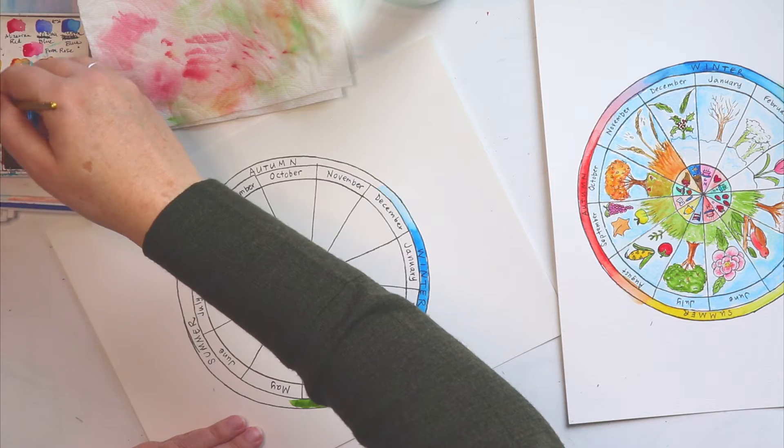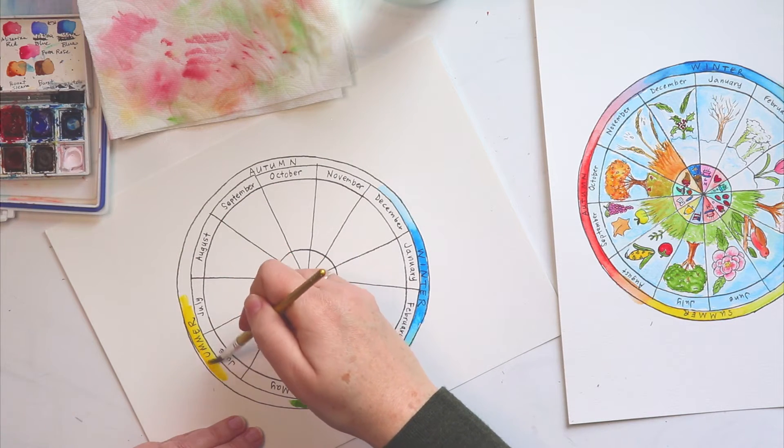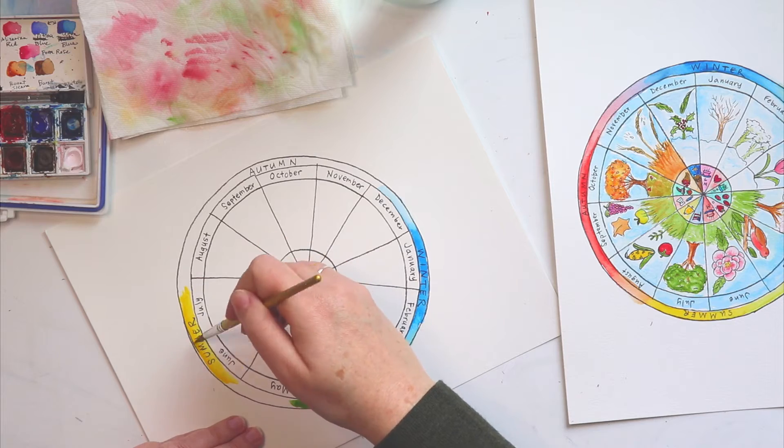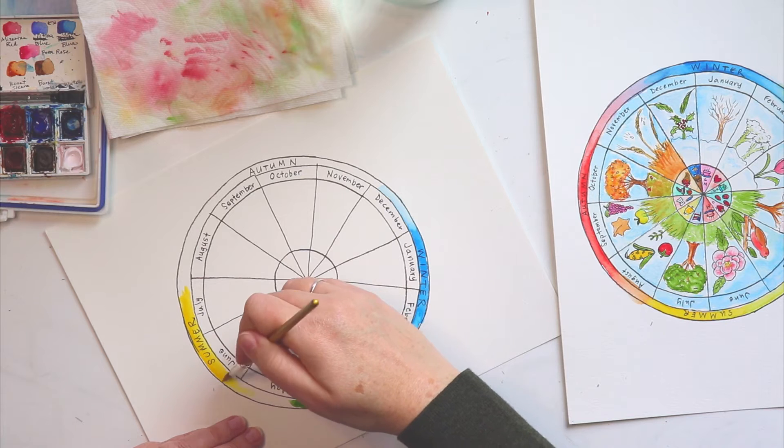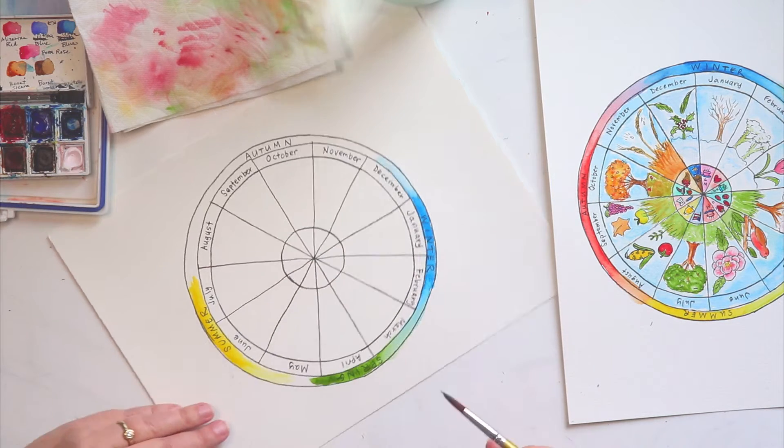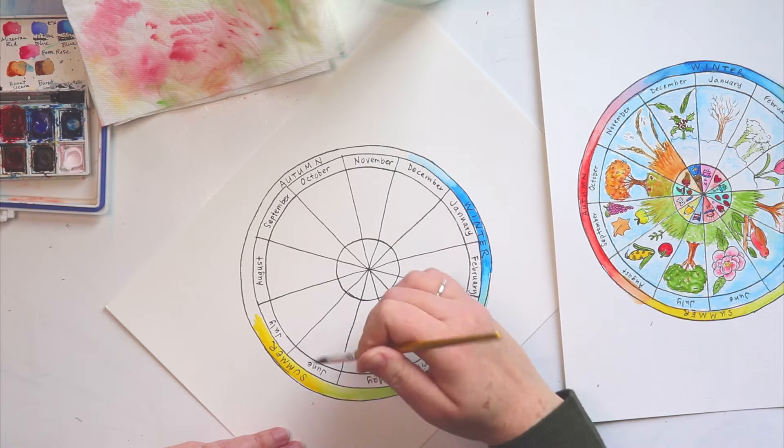Then I'm going to go to summer. I'm going to use my cadmium yellow for that. I'll just go right over. And I'll do the same thing. I'm just going to wash off my brush and just move those colors. Let them touch each other.